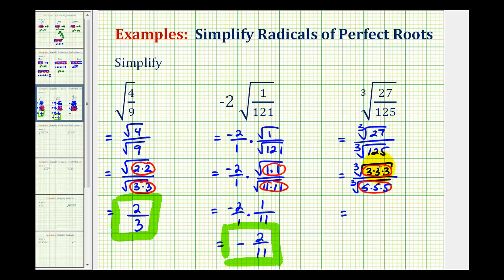So the cube root of 27 is equal to one factor of 3, and the cube root of 125 is equal to one factor of 5. So this simplifies nicely to three-fifths.